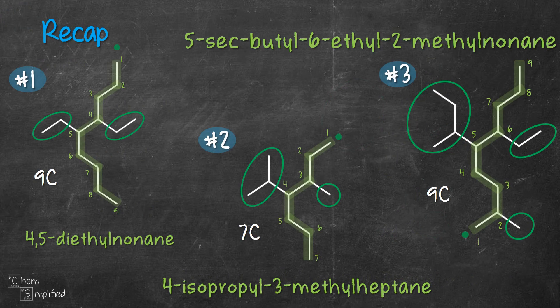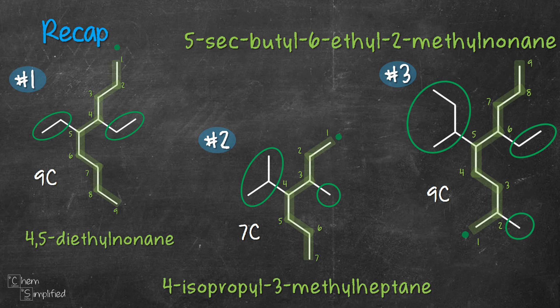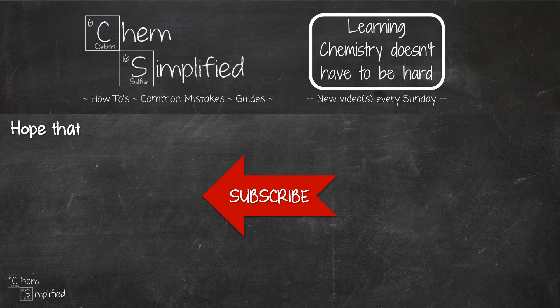To recap: first, explore all possibilities to find the longest chain by counting continuously to see which path gives the highest number of carbons. Once found, number the chain from both ends and choose the end closest to the substituents. Finally, alphabetize the substituents to name the compound. I hope the video was helpful — do subscribe and thanks for watching.